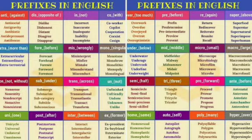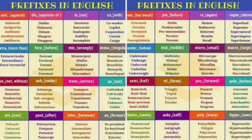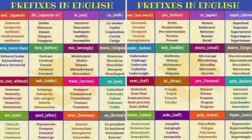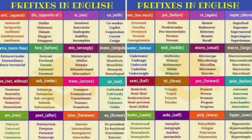For example, 'love' plus '-able' gives us 'lovable'. So 'love' is a noun and 'lovable' is an adjective. For example, 'lovable boy' or 'lovable cat'. Here we have used a suffix because we have added '-able' to the word 'love'.